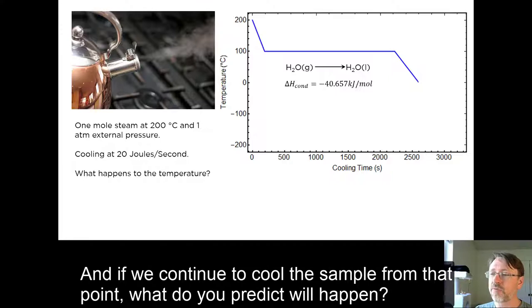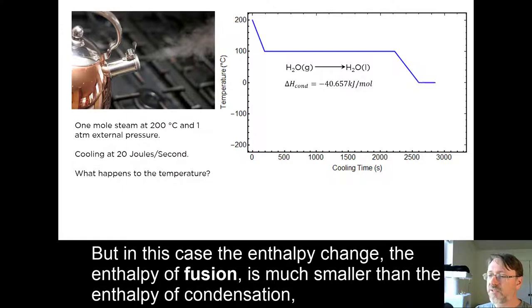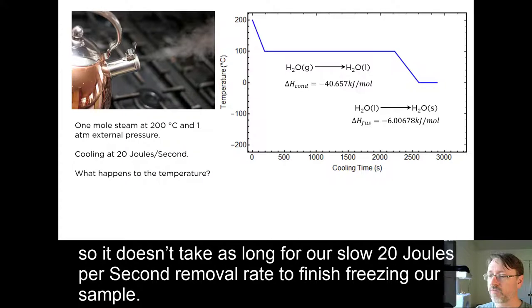And if we continue to cool the sample from that point, what do you predict will happen? If you said another phase change where the temperature stays the same, you would be right. But in this case, the enthalpy change, the enthalpy of fusion, is much smaller than the enthalpy of condensation. So it doesn't take as long for our slow 20 joules per second removal rate to finish freezing our sample.